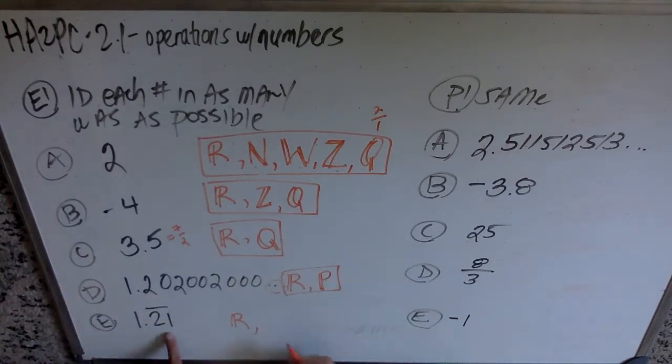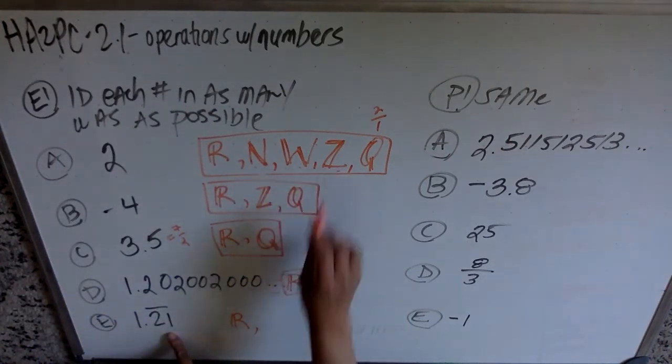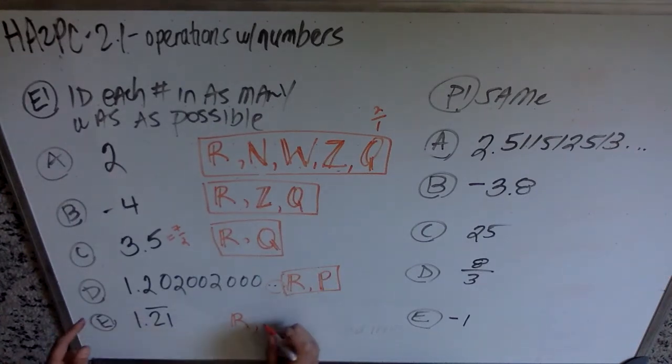And then to the last one, I know that I can rule out all of these guys because of the decimal, and because it is a repeating decimal, this is going to be a rational number. So I get R and Q.